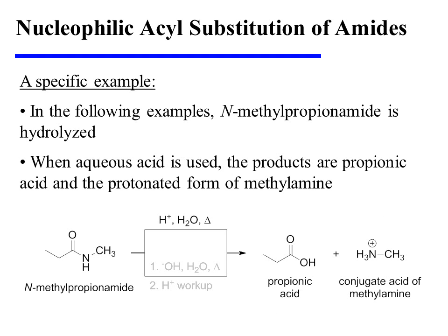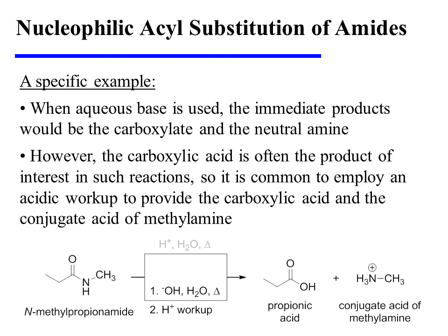In the following examples, N-methylpropionamide is hydrolyzed. When aqueous acid is used, the products are propionic acid and the protonated form of methylamine. On the other hand, when aqueous base is used, the immediate products would be the carboxylate and the neutral amine. However, the carboxylic acid is often the product of interest in such reactions, so it is common to employ an acidic workup to provide the carboxylic acid and the conjugate acid of methylamine — the same products that resulted from the previous reaction.